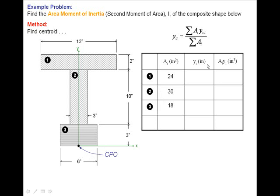And now let's start populating this column for the distance from the CPO to the centroid of each section. Shape number one is three plus ten plus one, fourteen inches from the CPO. Shape two is three plus half of ten, five, so eight inches up from the CPO. And finally shape three is one and a half inches up from the CPO.